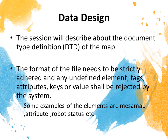Regarding the data structure design, this section will describe the document type definition, which is the detail of the map. We also make use of those definitions to build the data structure for the system. The format of the file needs to be strictly adhered, and any undefined elements, text, attributes, keys, or values shall be rejected by the system. For example, all points must be represented by X and Y coordinates in string format. Robot status needs to contain current degree and current coordinates. Maps will need to be stored in mesamap format.